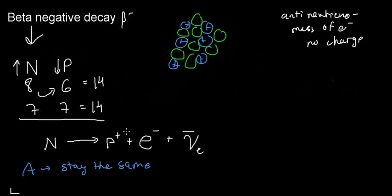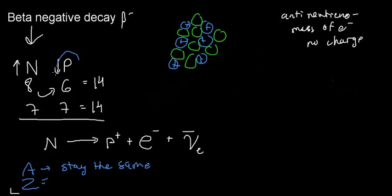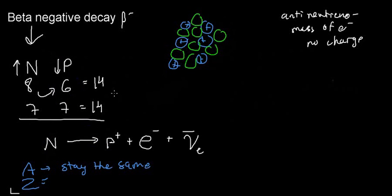All nucleons are staying in the nucleus. What happens to the atomic number? I notice that I had six protons and now I have seven protons — so Z increased. I gained one proton.